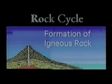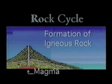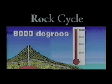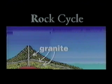Igneous rocks are formed by magma. Magma is heated by the core of the Earth, which is 8,000 degrees Fahrenheit. This heats up the minerals and they head toward the surface of the Earth. If they reach the surface and are spewed by a volcano, they are called lava. If the minerals do not reach the surface, they cool inside the Earth and form rocks such as granite.